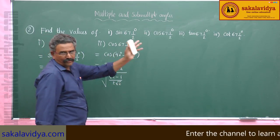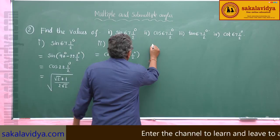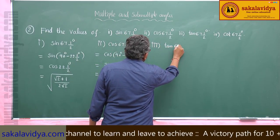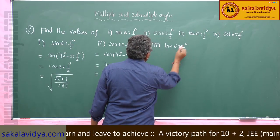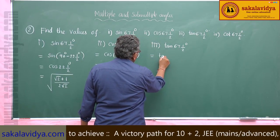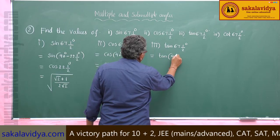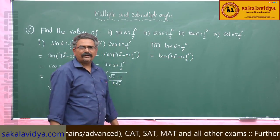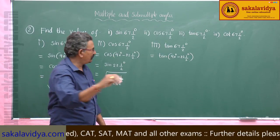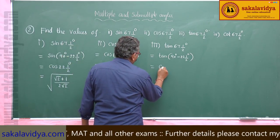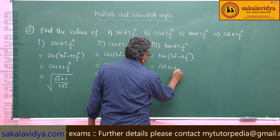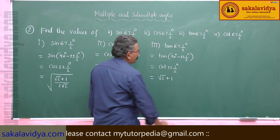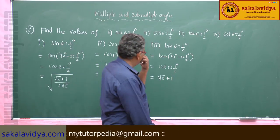Third problem: tan 67 and a half degrees. This we write as tan(90 degrees minus 22 and a half degrees). The value of tan(90 minus θ) is cot θ, so this equals cot 22 and a half degrees, which is √2 + 1.